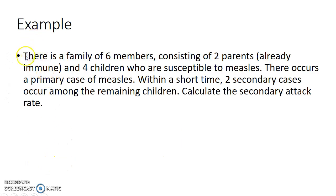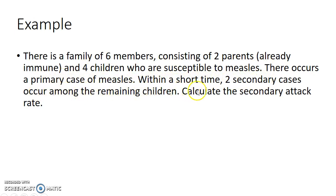Now let us see a problem regarding secondary attack rate. There is a family of 6 members consisting of 2 parents who are already immune and 4 children who are susceptible to measles. There occurs a primary case of measles. Within a short time, 2 secondary cases occur among the remaining children. Calculate the secondary attack rate.